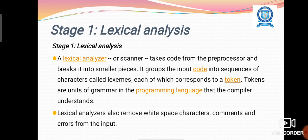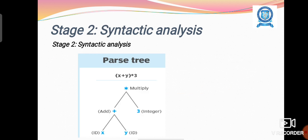The first stage is lexical analysis. In stage 1, the lexical analyzer takes the code from the preprocessor and breaks it into smaller pieces. It groups the input code into sequences of characters like lexemes, each of which corresponds to a token. Tokens are units of grammar in the programming language that the compiler understands. Lexical analyzers also remove whitespace characters, comments and errors.